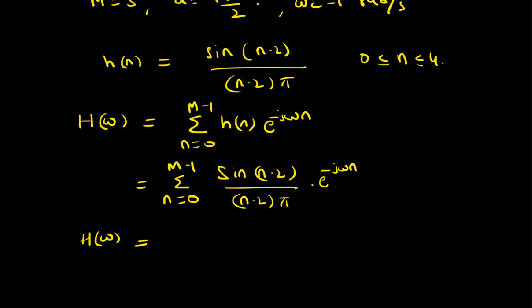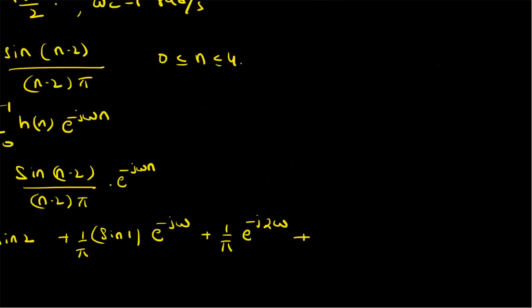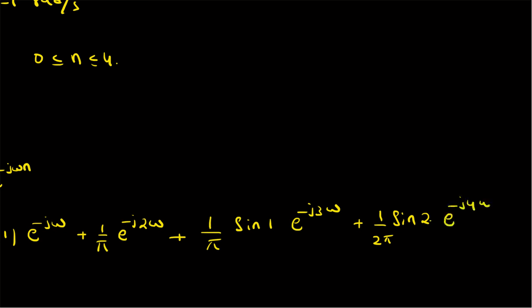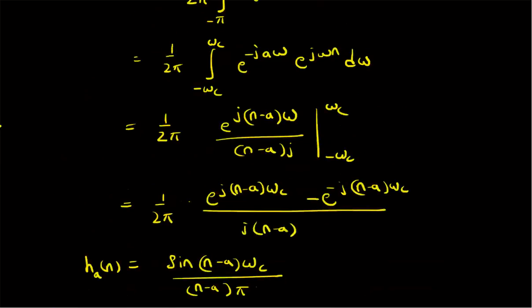Therefore H(ω) can be explicitly written as follows. For n = 0: (1/2π)·sin(2) · e^0. For n = 1: (1/π)·sin(1) · e^{−jω}. For n = 2: sin(0)/0, which under the limit becomes 1, giving (1/π)·e^{−j2ω}. For n = 3: (1/π)·sin(1)·e^{−j3ω}. For n = 4: (1/2π)·sin(2)·e^{−j4ω}. That is the frequency response of the designed FIR filter.